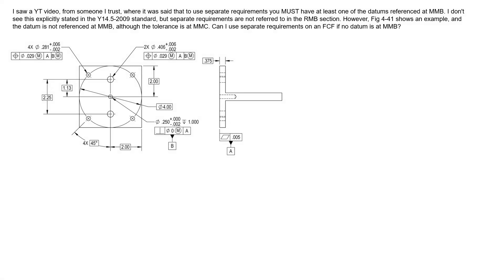Let's look at what simultaneous requirements means. In this sample drawing, we have simultaneous requirements applied to a couple of feature control frames. Both feature control frames have the same datums referenced with the same modifiers — datum A and datum B modified at MMB. This stipulates simultaneous requirements between these two patterns: this pattern of four and this pattern of two must be checked as a singular pattern.